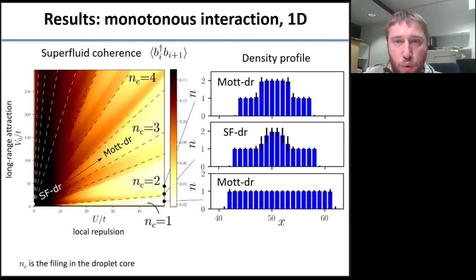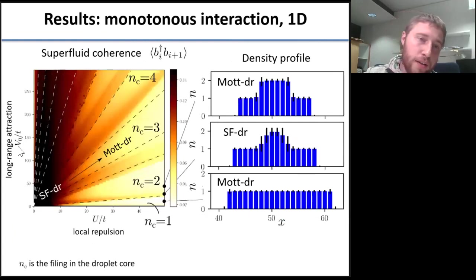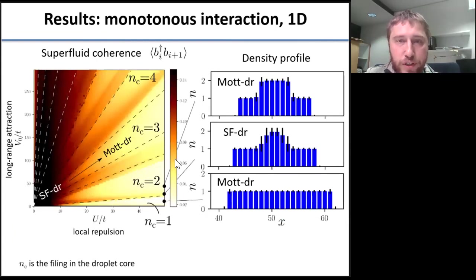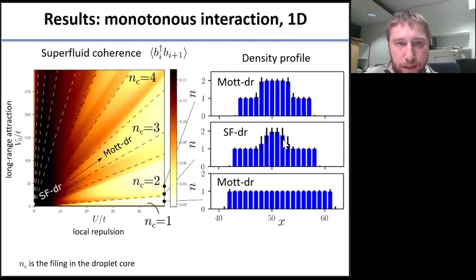First, I show our results for the monotonous interaction. This color plot shows the dependence of superfluid coherence in coordinates of U, which is local repulsion, and V, which is long-range attraction. You see this funny stripy structure with regions of small coherences corresponding to Mott droplets, and larger coherences which are the superfluid droplets. Comparing three points on the phase diagram, we see a transition between states with small fluctuations of local fillings — Mott droplets — and large fluctuations, the superfluid droplet in the middle.